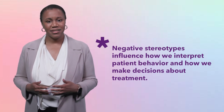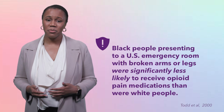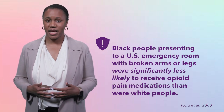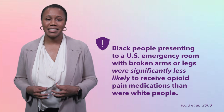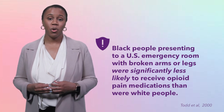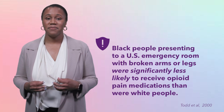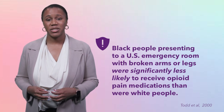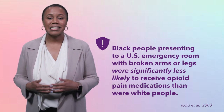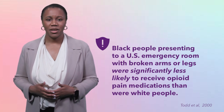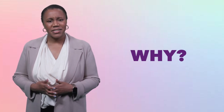In one study, Dr. Todd and his colleagues reported that black people presenting to a U.S. emergency room with broken arms or legs were significantly less likely to receive opiate pain medications than were white people. The difference was 57 versus 74 percent, despite the groups having similar self-reports of pain. Why would there be a significant difference in outcomes based on race?